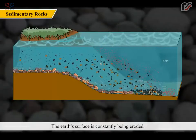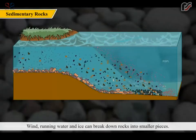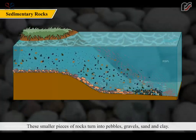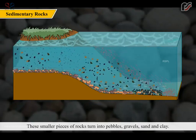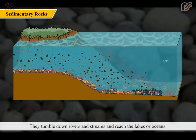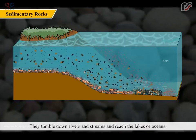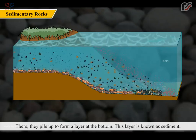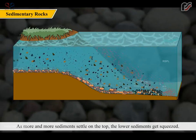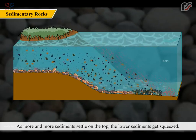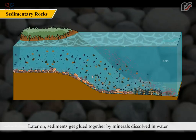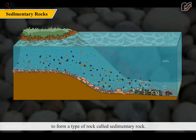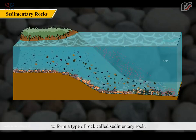The earth's surface is constantly being eroded. Wind, running water and ice can break down rocks into smaller pieces. These smaller pieces turn into pebbles, gravels, sand and clay. They tumble down rivers and streams and reach lakes or oceans. There, they pile up to form a layer at the bottom, known as sediment. As more and more sediments settle on top, the lower sediments get squeezed and later get glued together by minerals dissolved in water to form sedimentary rock.